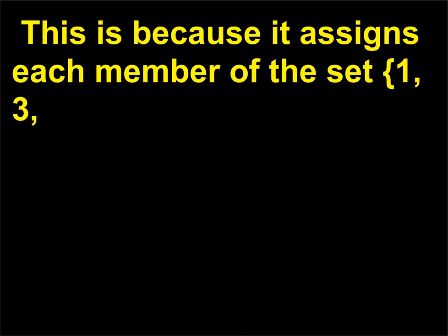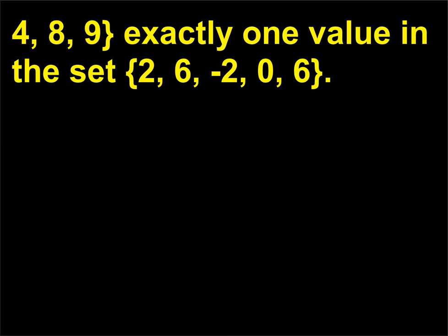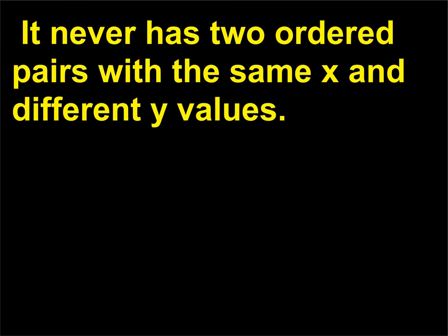This is because it assigns each member of the set {1, 3, 4, 8, 9} exactly one value in the set {2, 6, -2, 0, 6}. It never has two ordered pairs with the same X and different Y values.